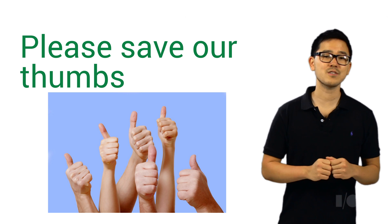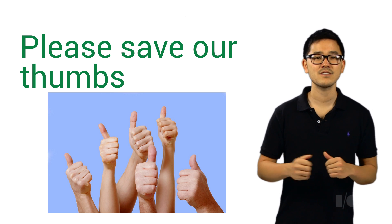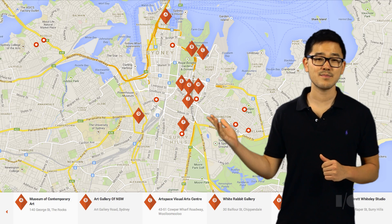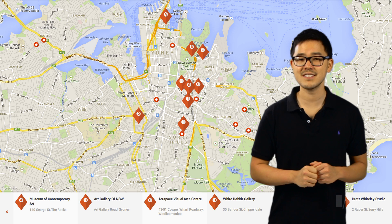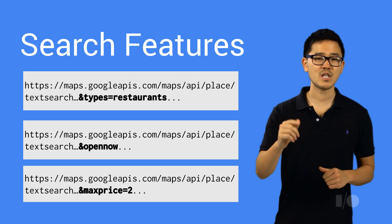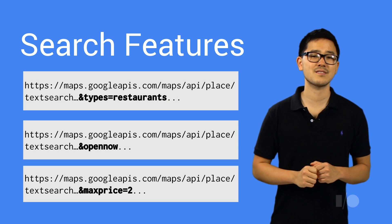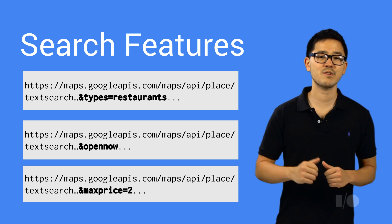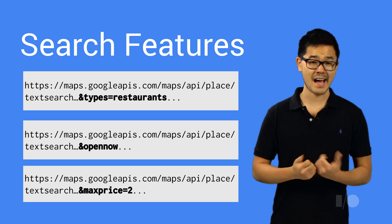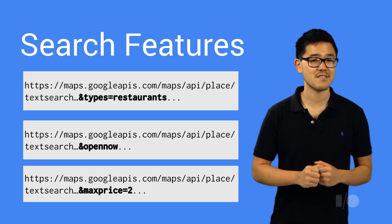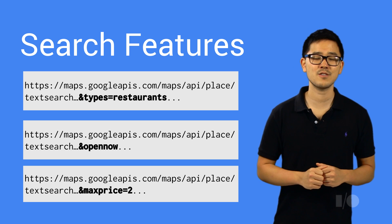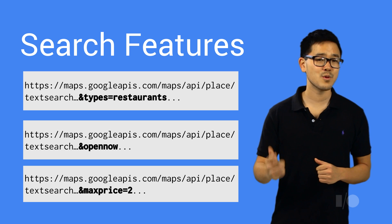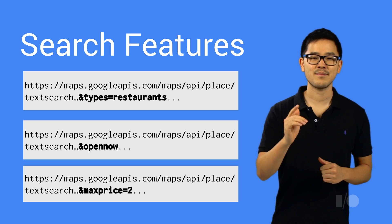Both endpoints also include various knobs and levers so that you can customize what type of data is returned. For example, in this map we're only showing museums around central Sydney. Showing specific types of places is only one of the many customizations you can do. You can also choose to return to your end users only places that are open now, or ones at a specific price level. With the Places API Search features, you can enable your users to find, explore, and share places that matter to them.